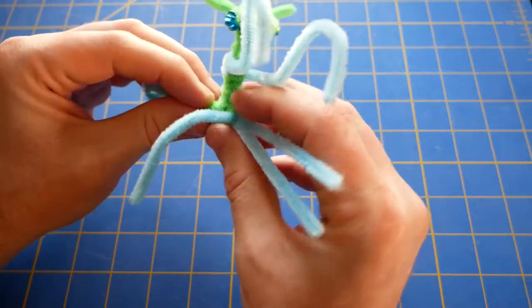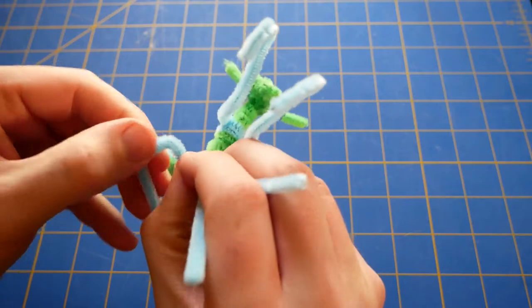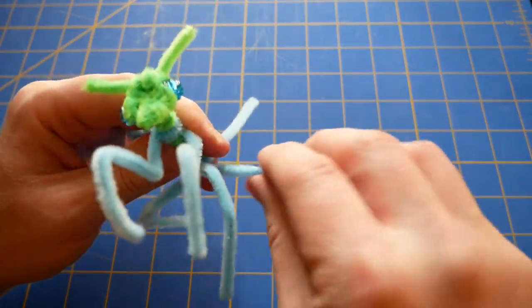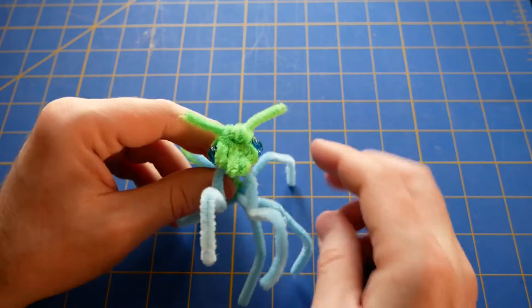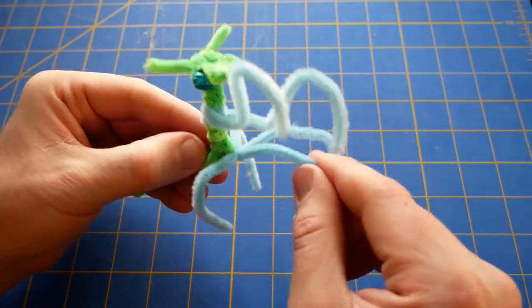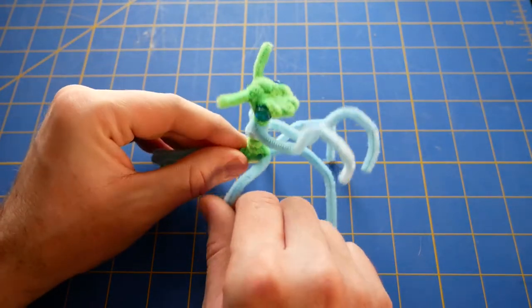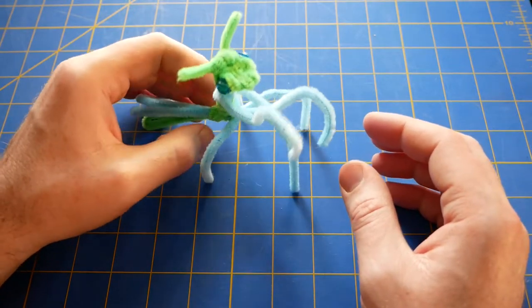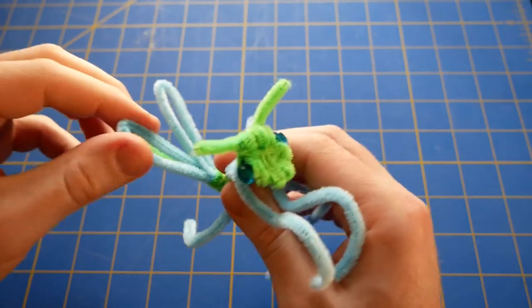And then you can bend the legs such that they have joints, like that. These two loops on the back are the wings.